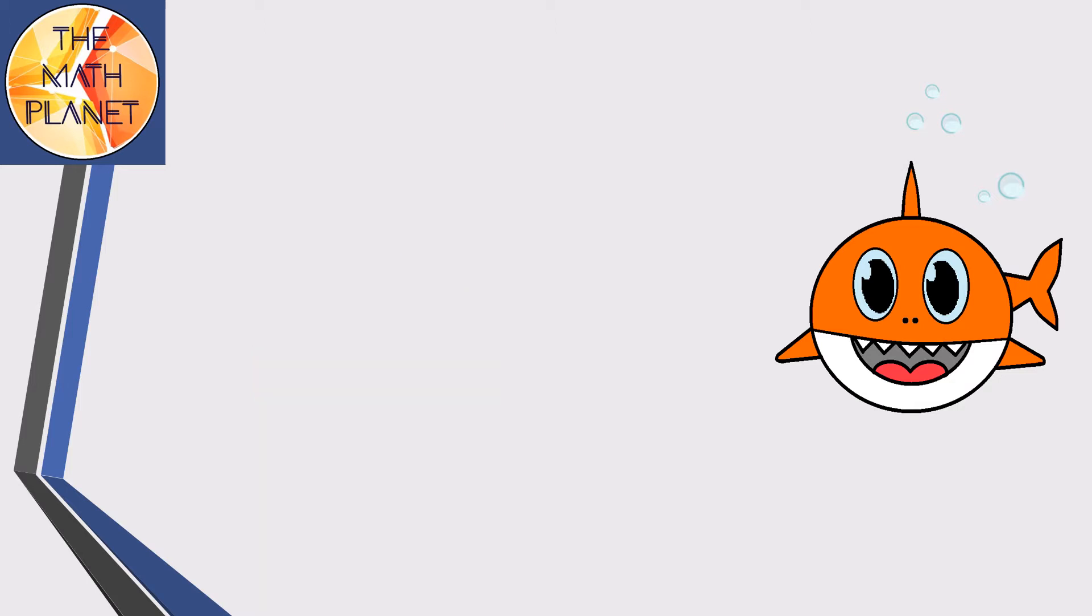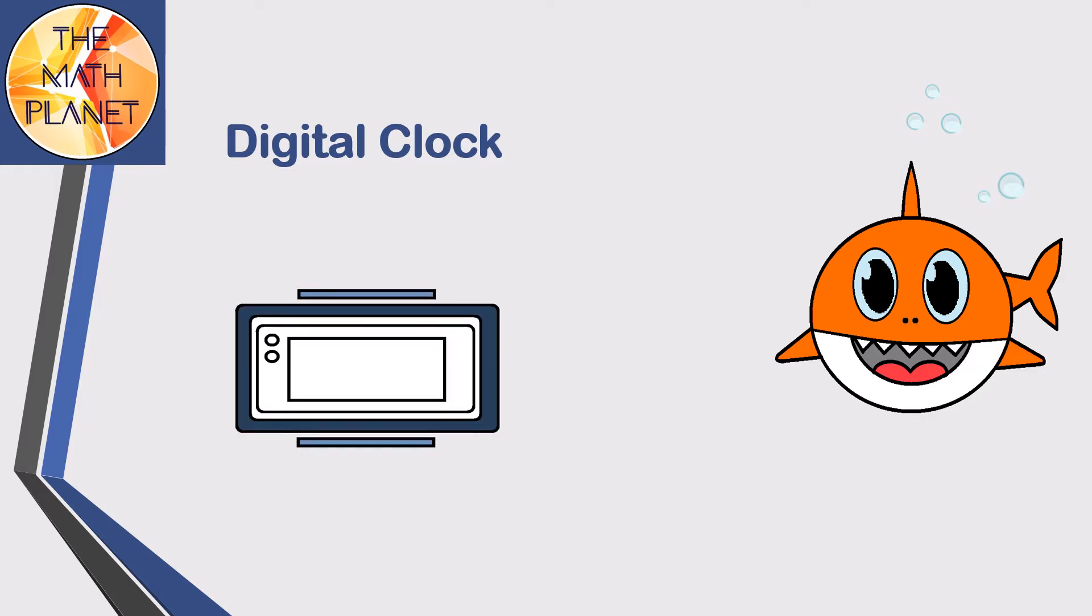Next we have the digital clock. The digital clock contains two digit numbers. In the clock shown, the leftmost number is for the hours, the middle number is for the minutes, and the rightmost number is for the seconds.